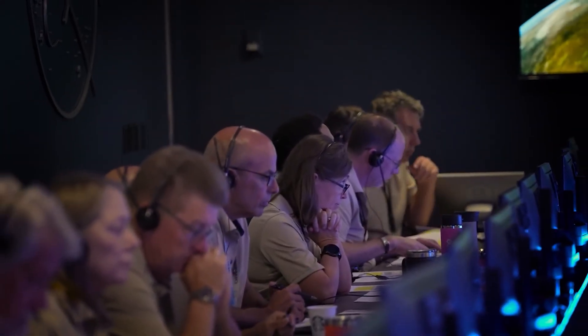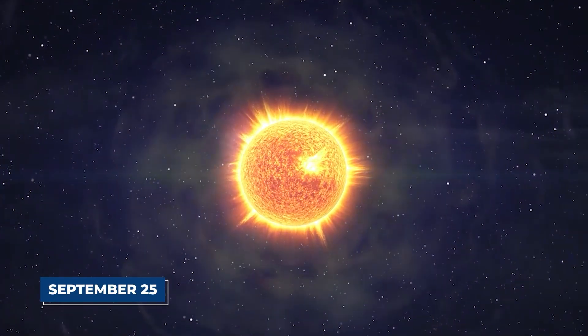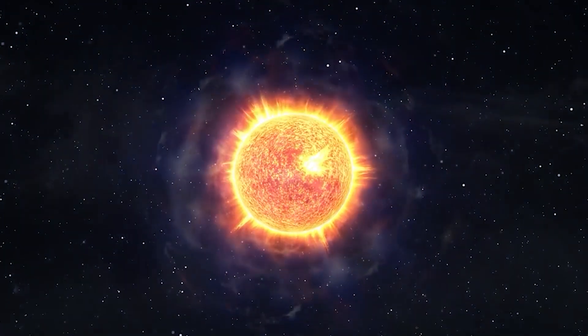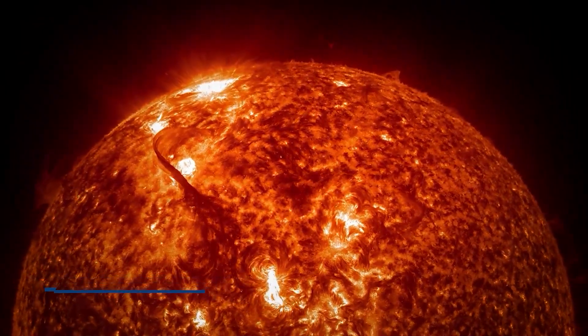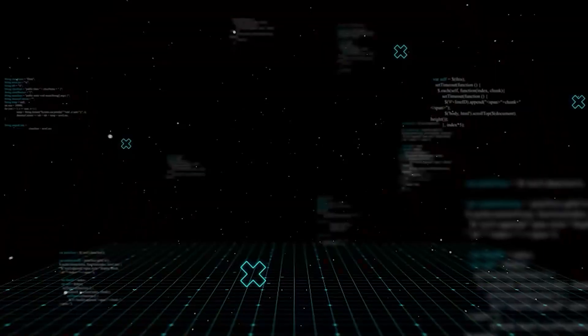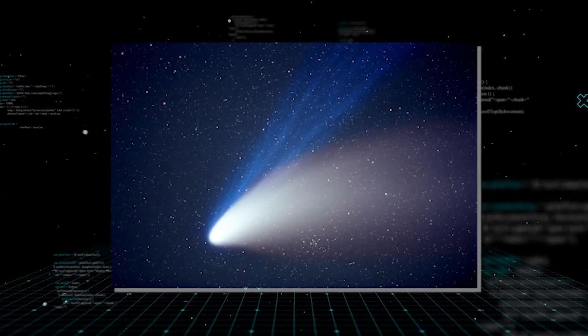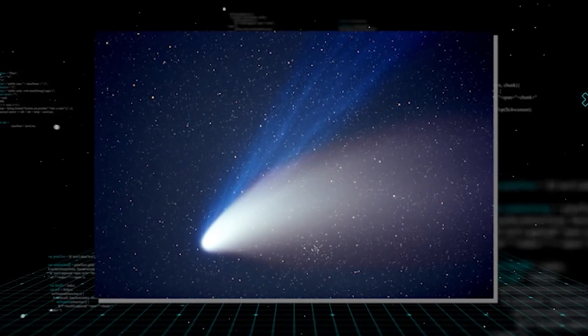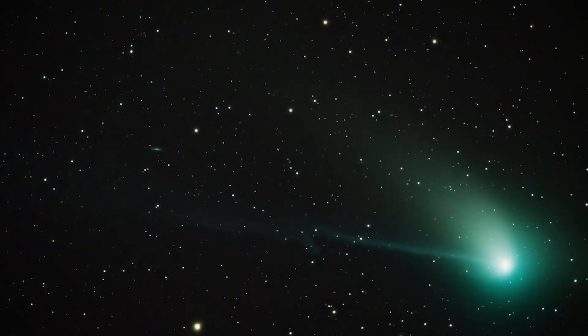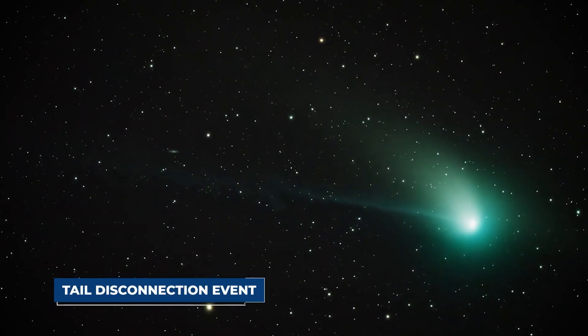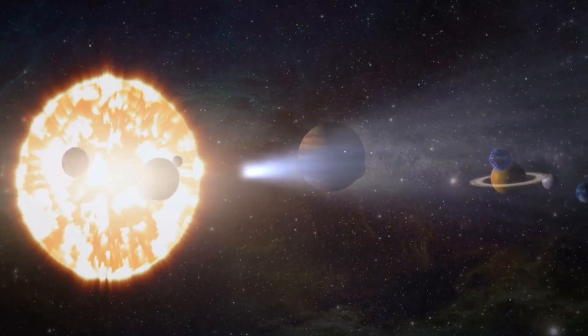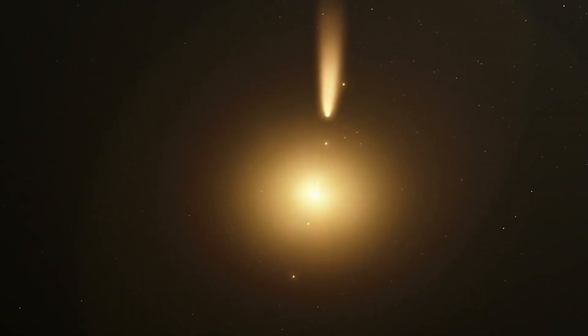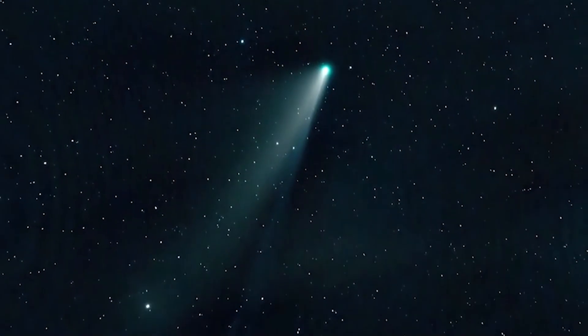But the gas cloud around 3I Atlas is behaving in ways that have left astronomers completely baffled. On September 25th, a powerful wave of charged particles from the sun, known as a coronal mass ejection, or CME, struck the object head-on. An event like this should have ripped its tail apart or caused the entire structure to ripple and destabilize. It's a well-documented phenomenon called a tail disconnection event. But that's not what happened. 3I Atlas seemed to absorb the blow. It held its ground, its massive plasma shield barely flinching.